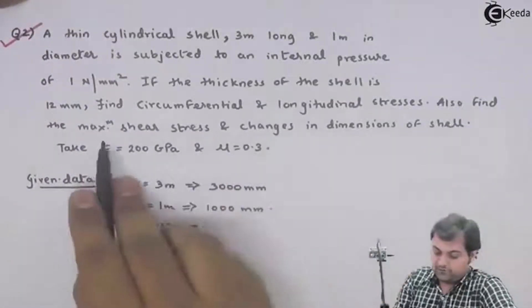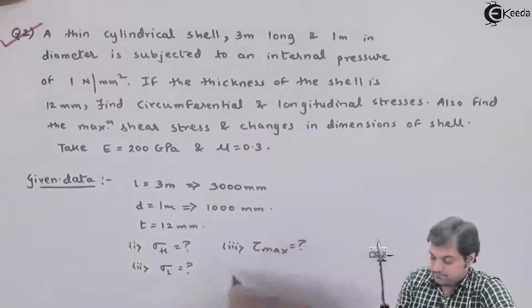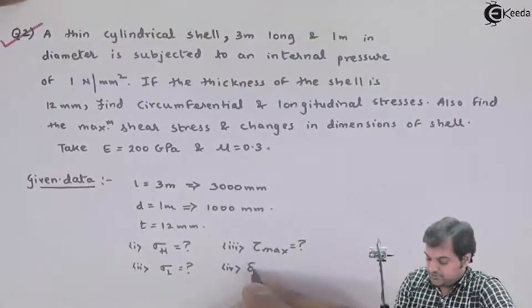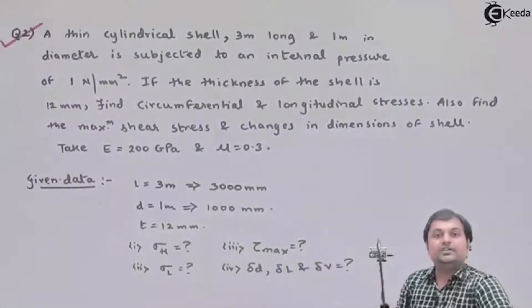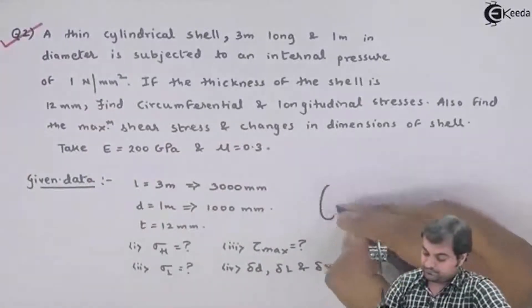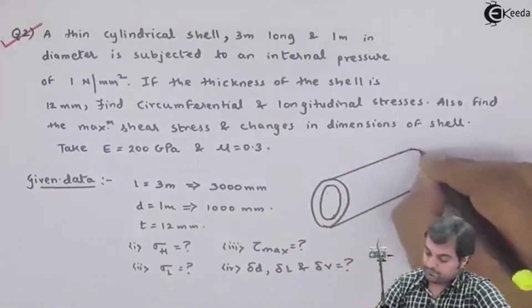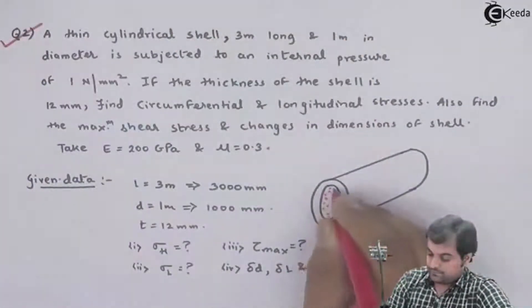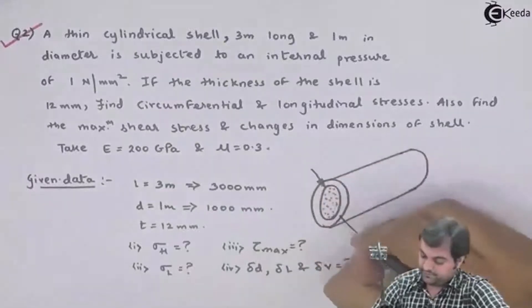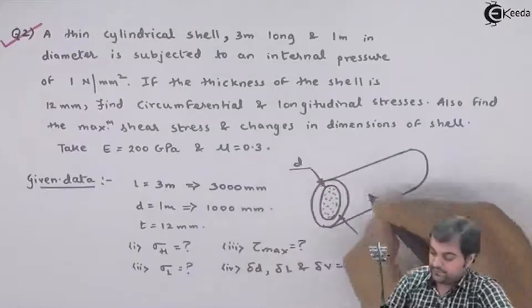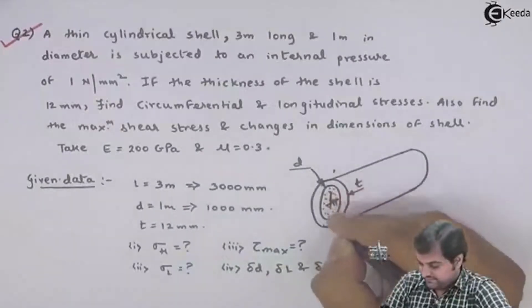The questions ask us to find: hoop stress, longitudinal stress, maximum shear stress (tau max), and changes in dimension — that is, change in diameter, change in length, and change in volume. Here I can draw a thin cylinder showing the internal fluid, with diameter d, thickness t, and length L.